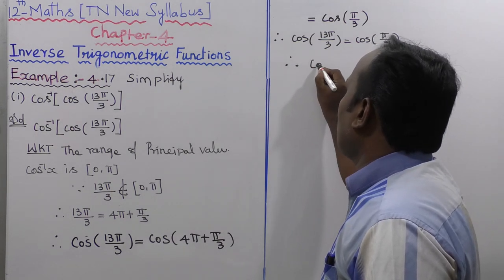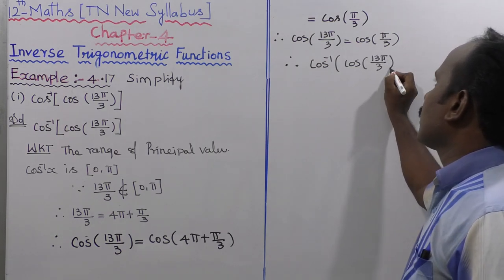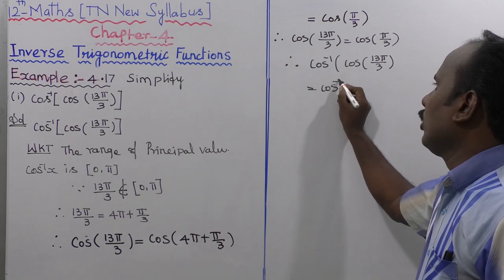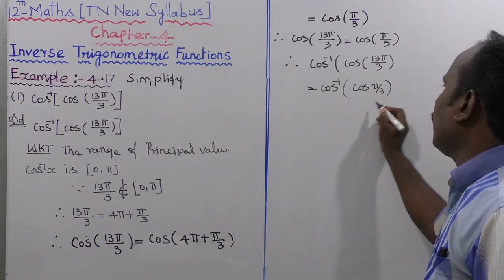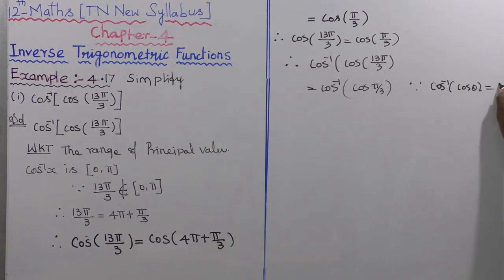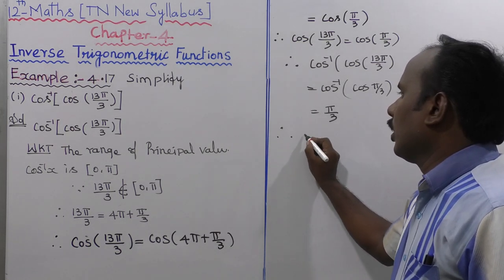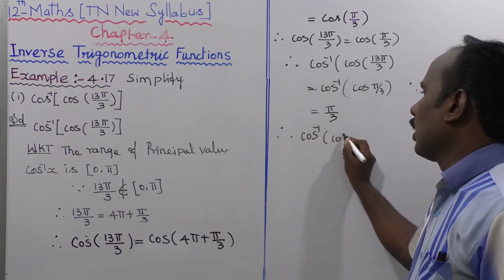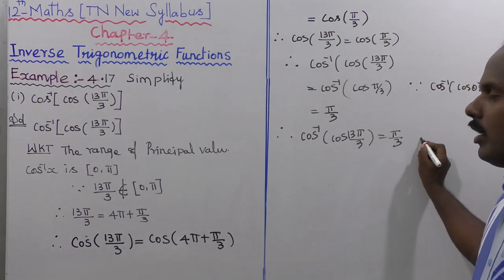So the given sum cos⁻¹(cos(13π/3)) = cos⁻¹(cos(π/3)). Applying the formula cos⁻¹(cos θ) = θ, where θ belongs to [0, π], this equals π/3. Therefore cos⁻¹(cos(13π/3)) = π/3.